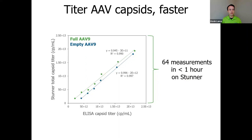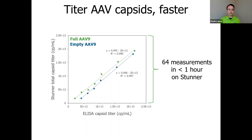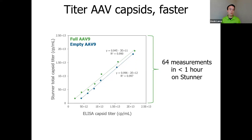Looking at capsid titer, we want to compare against an ELISA technique. Here we're evaluating AAV9 against a typical commercially available plate-based ELISA. For both full AAV9 and empty AAV9, we see slopes very close to one and R-squared values of 0.99 or higher, confirming everything is nicely linear. The dynamic range for Stunner goes down to about 1E12 capsids per mL with essentially no upper limit. More importantly, Stunner generates all 64 measurements seen on this graph in less than an hour — each sample read takes about 45 seconds — whereas ELISA requires extensive pipetting and processing over a couple of hours, with no standards needed on Stunner.